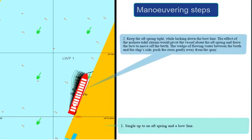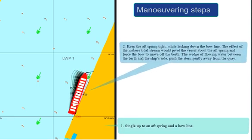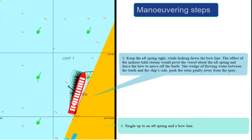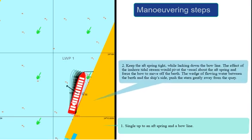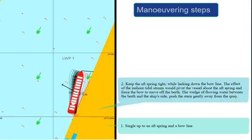while slacking down the bow line. The effect of the inshore tidal stream would pivot the vessel about the aft spring, and force the bow to move off the berth.